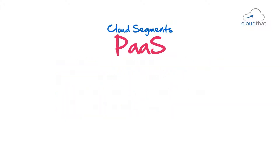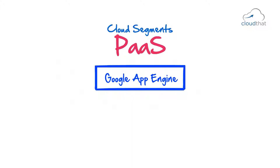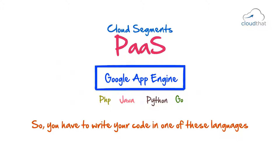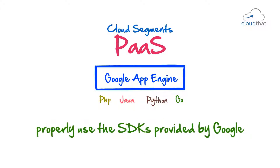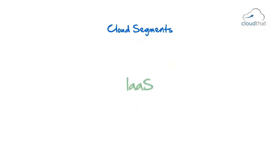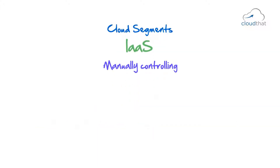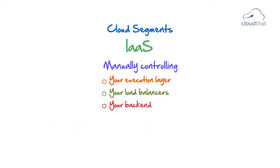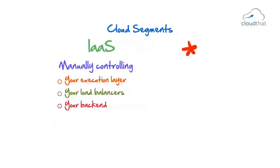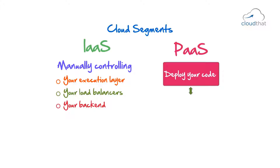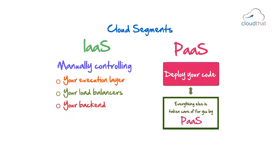You also have to follow the protocol set by the platform. For example, Google App Engine currently only supports PHP, Java, Python, and Go. So you have to write your code in one of these languages and properly use the SDKs provided by Google. On Infrastructure as a Service, you are manually controlling your execution layer, your load balancers, your backend. But with PaaS, you just deploy your code and everything else is taken care of by the platform.